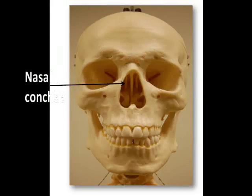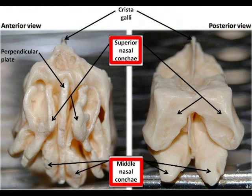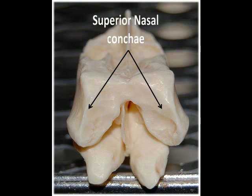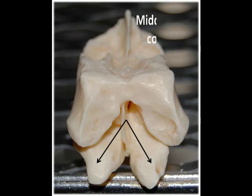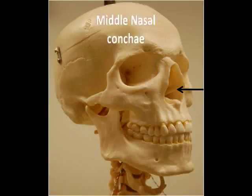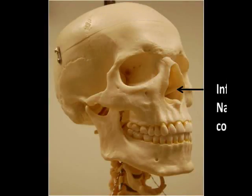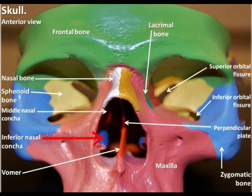Located on both right and left lateral masses are the nasal conchi. There are two pairs of these thin, curved, bony projections located on either side of the nasal septum. They are the superior and middle nasal conchi. There is a third pair of nasal conchi called the inferior nasal conchi, but they are actually separate bones and not part of the ethmoid bone.